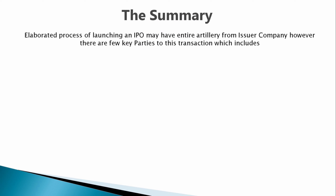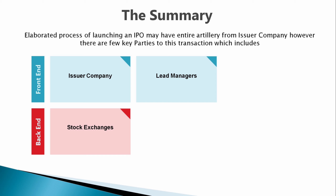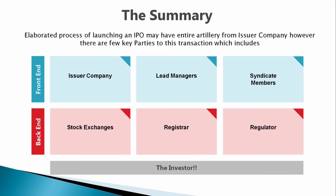Let us summarize what we have learned so far. The elaborated process of launching an IPO may have an entire artillery from the issuer company, however there are a few key parties to this transaction which include: Issuer company — the company willing to raise funds; Lead managers — who galvanize the IPO process; Stock exchanges — which create the marketplace for companies and investors; Syndicate members — who help as distributors and collectors of application forms and bids respectively; Registrar — who works as a record keeper in the IPO process; Regulator — who acts as a watchdog and protects the interest of investors; and Investor — who finally invests in an IPO.